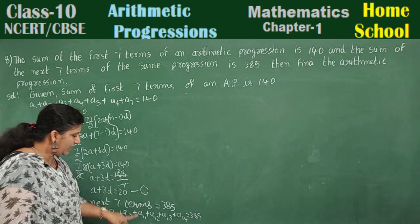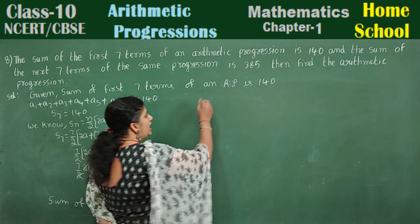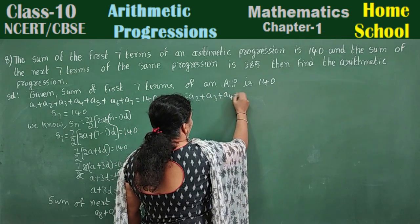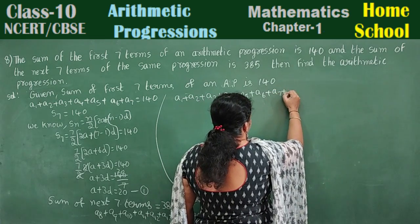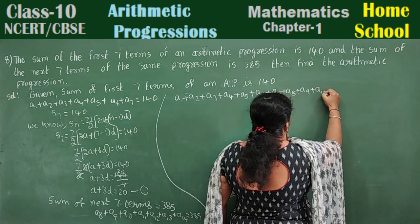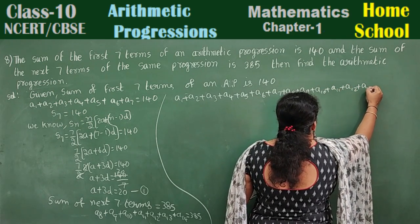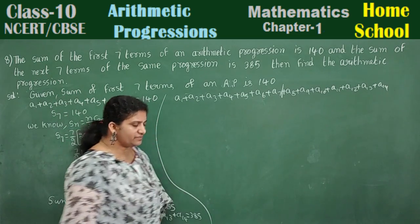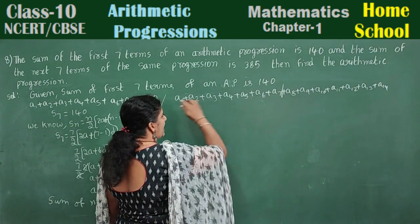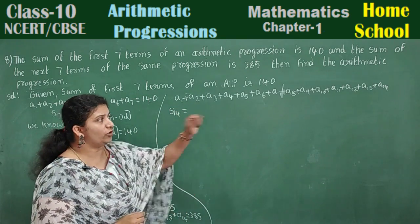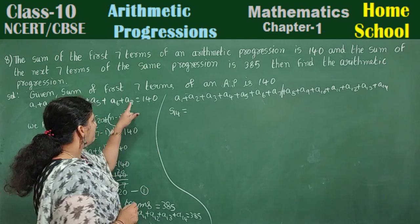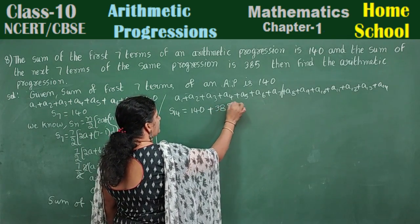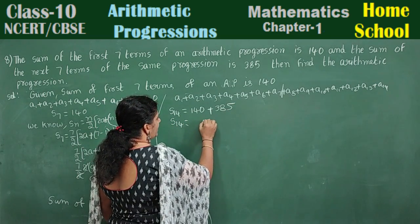We have the sum of the first 7 and the next 7 terms. Combined, that means a1 through a14 — all 14 terms. The sum of the first 7 is 140 and the next 7 is 385. So S14 is equal to 140 plus 385, which gives S14 is equal to 525.